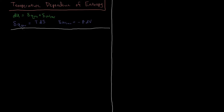Putting that together, we can get an expression for the differential in internal energy: dU = TdS − pdV. We're going to start seeing more and more expressions like these for things like internal energy, entropy, enthalpy, and then later on, Helmholtz and Gibbs energy. Pay attention to forms like these because they're going to start popping up a lot very shortly.